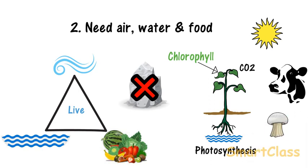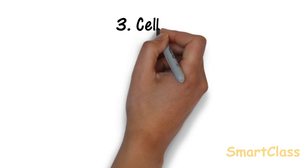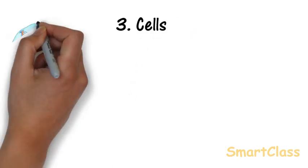Some plants like mushrooms do not have chlorophyll. They grow on dead animals and plants. The third characteristic of living things is they are made up of cells.